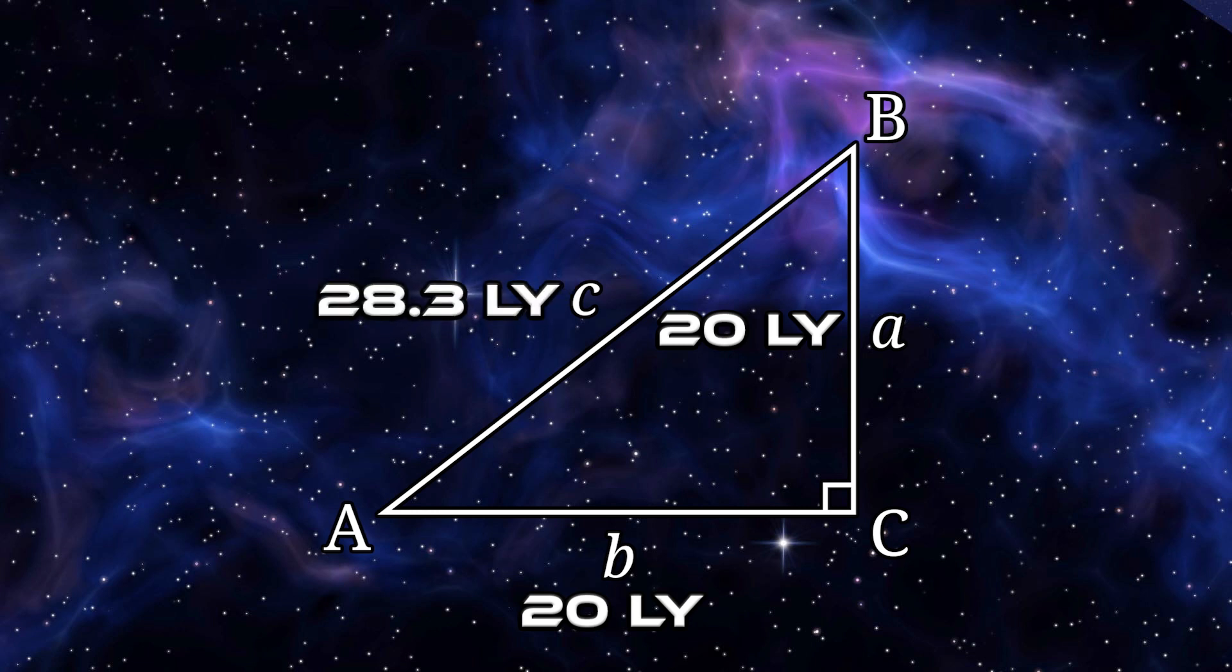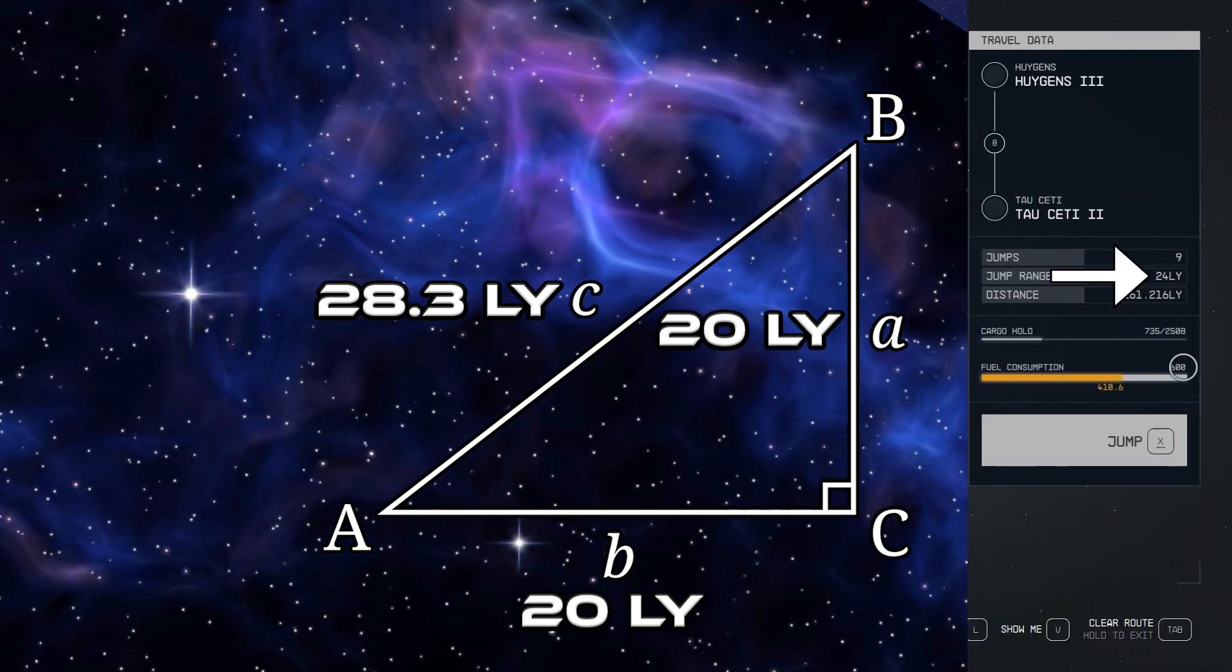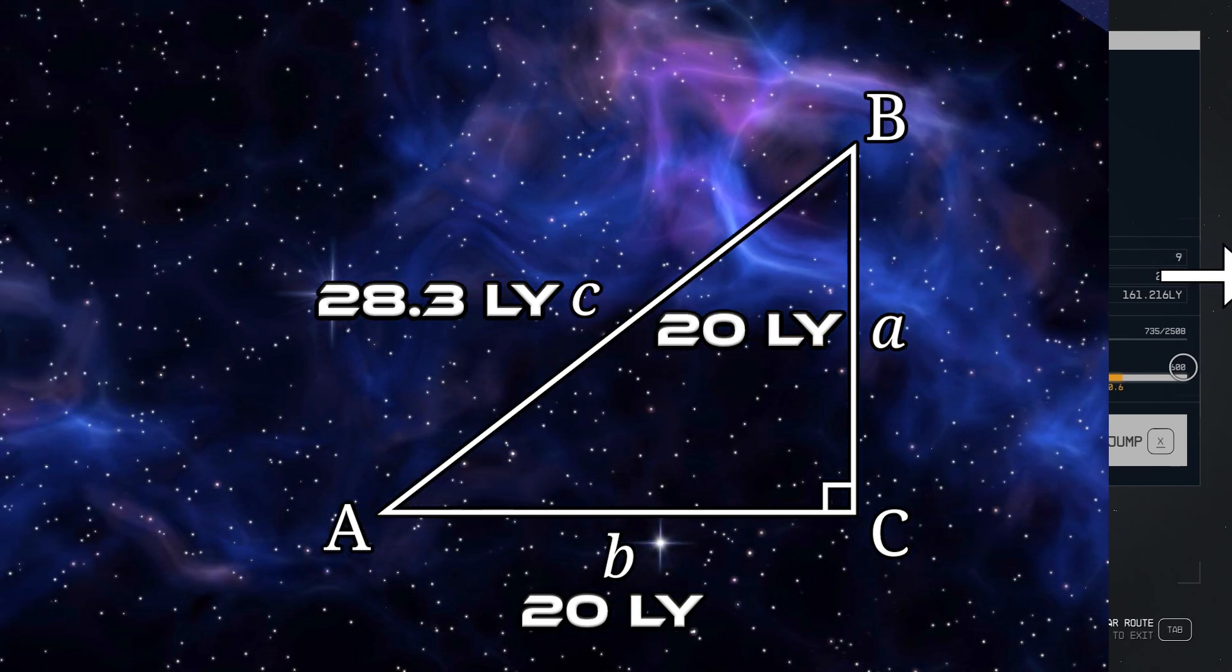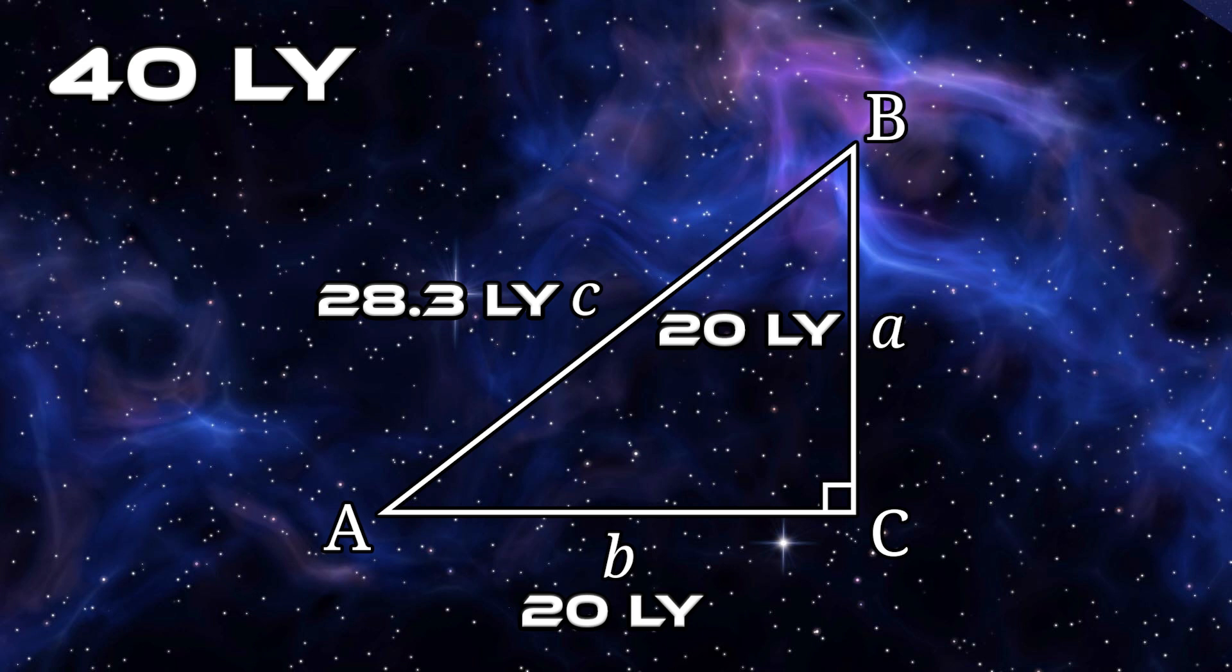If I wanted to travel from this point to this point, and I have my current jump drive that only allows for a 24 light year jump, then I would need to travel along sides A and B in order to make that trip, which would then be a 40 light year trip.